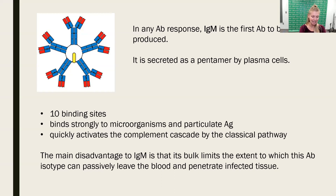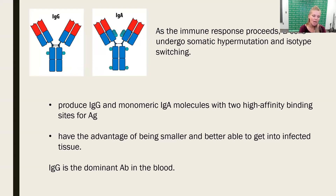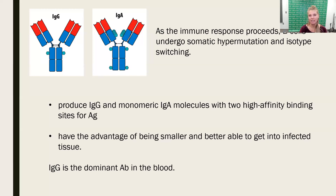IgM can't leave the blood and diffuse through tissues like IgG because of its big size, so it's limited in its action. But IgA and IgG are going to be produced once the infection continues and T follicular helper cells send cytokines to turn on isotype switching. IgG and IgA will be produced with very high affinity through affinity maturation, and because they're small they can get through tissue a lot easier than IgM. IgG is by far the dominant antibody found in the circulation.